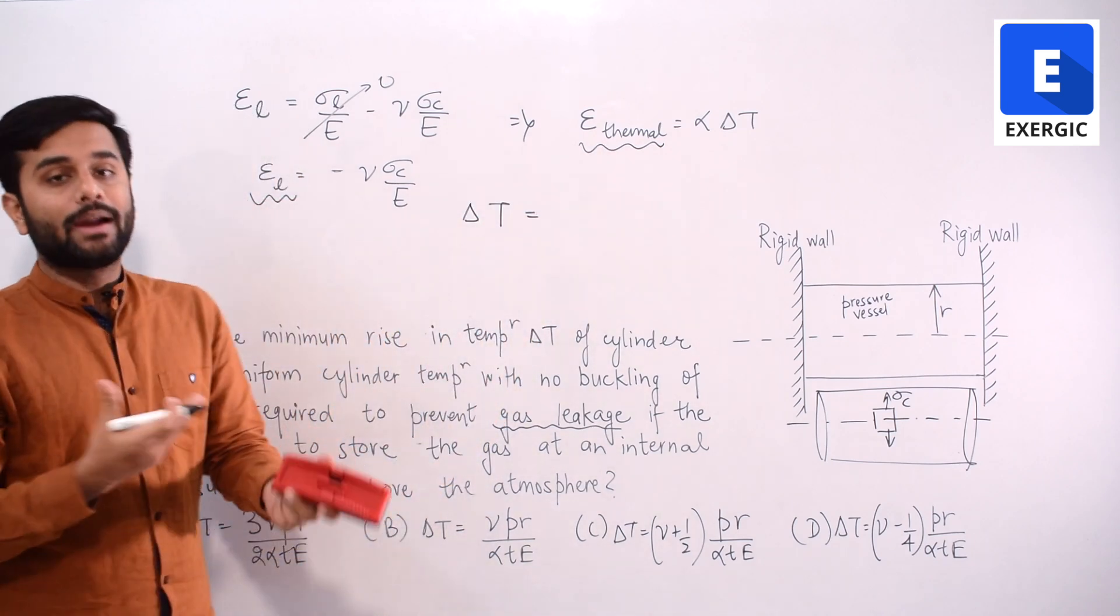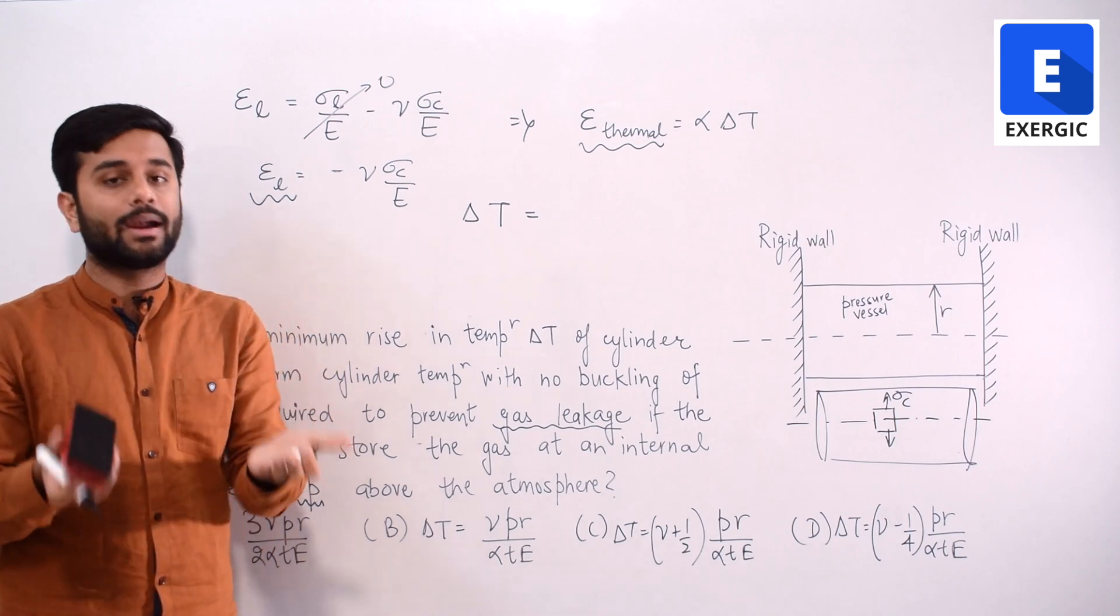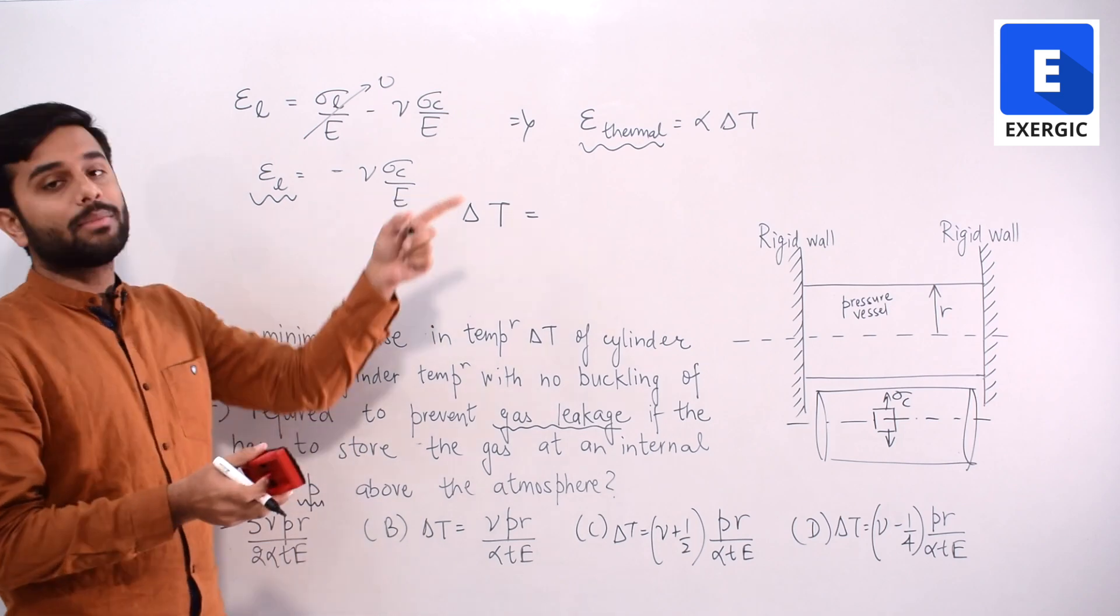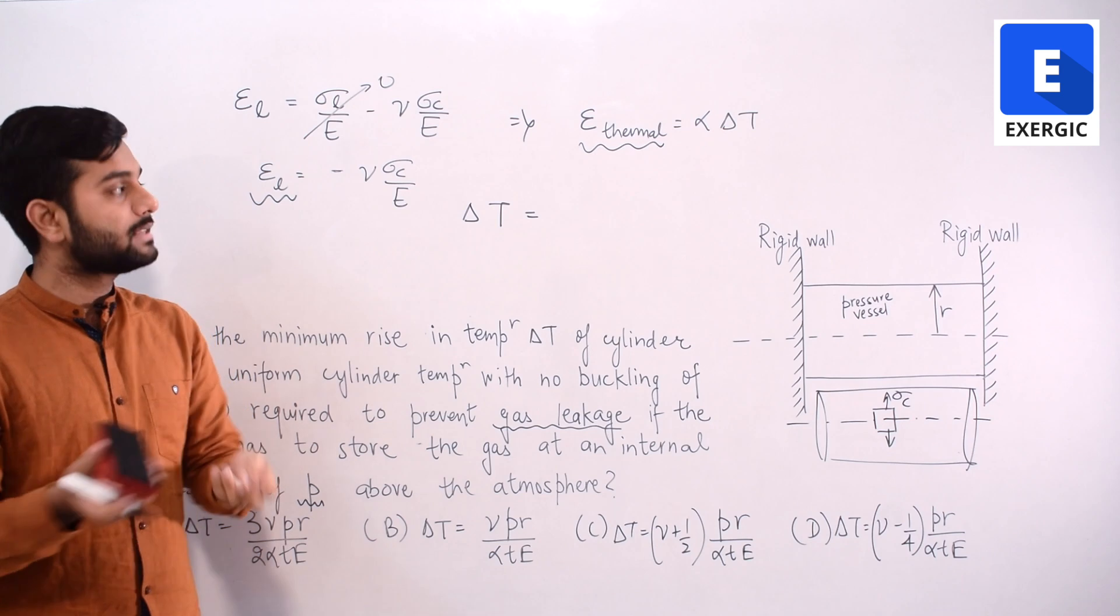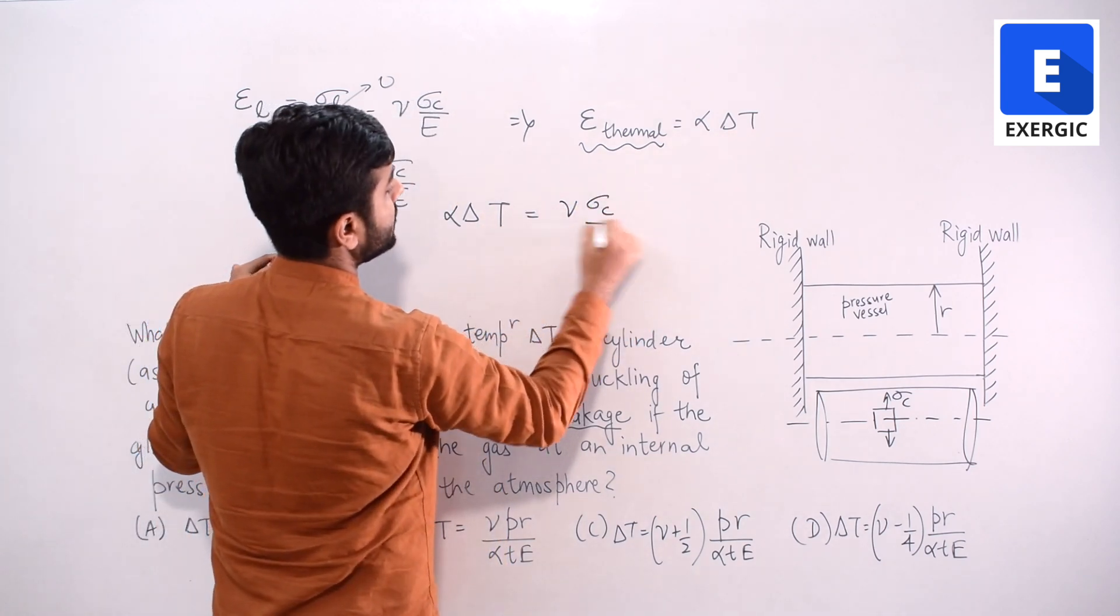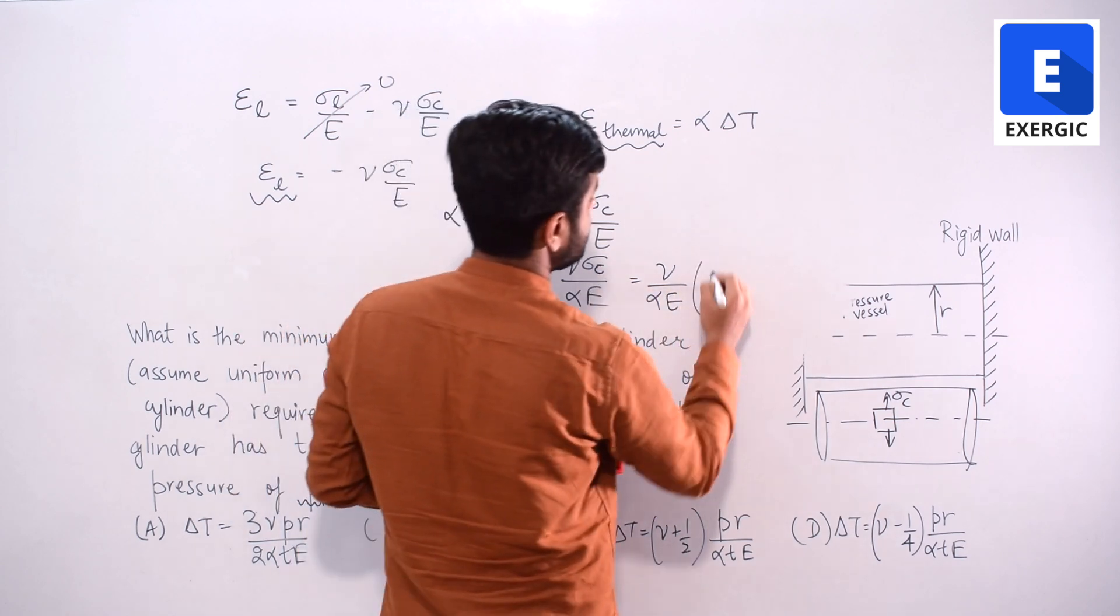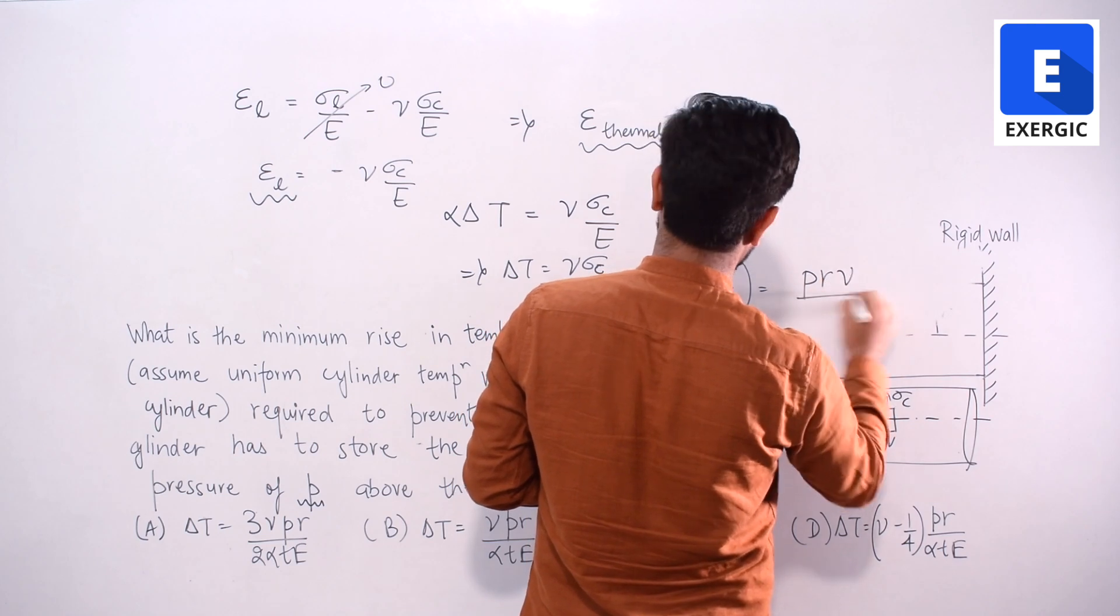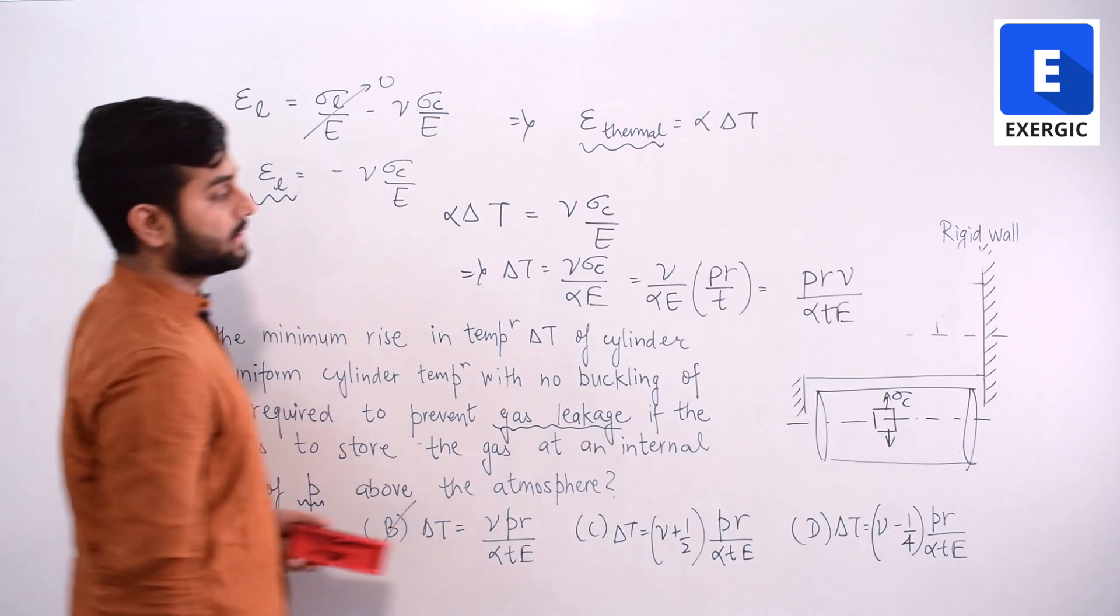But we only have to equate the magnitude since we know that this much is already the reduction in the value of strain. So same should be the expansion. So we are only considering the magnitude here. The sign we are not considering since we know that it is compression, or what you can do - you can simply add both of them up that sigma l plus sigma thermal is equal to 0 and then you send this one on the other side, so automatically sign will become positive. So delta T means alpha delta T. This alpha delta T is equal to nu sigma c divided by E and if you simplify it you will get delta T is equal to nu and since sigma c is P R by T, you have to write in terms of radius. So you will get P R nu divided by alpha T E. What are the options which are matching? This option B: P R nu divided by alpha T E. This is the required answer.